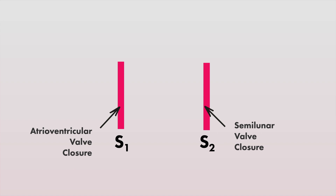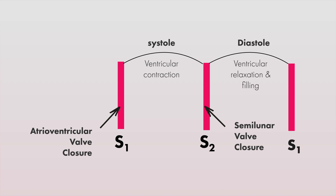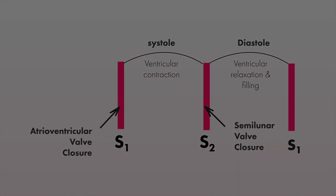The interval between S1 and S2 is systole, the time during which the ventricles contract. The interval between S2 and the S1 of the next cardiac cycle is diastole, which is the time during which the ventricle is filled with blood.